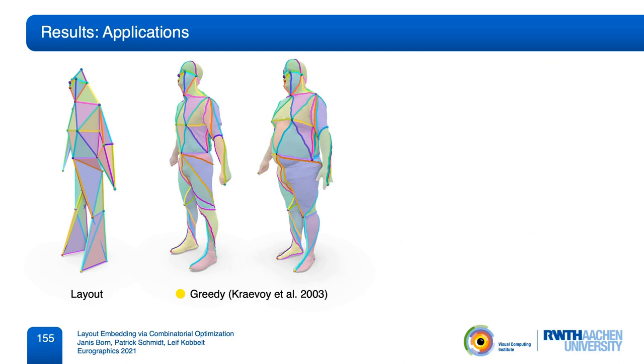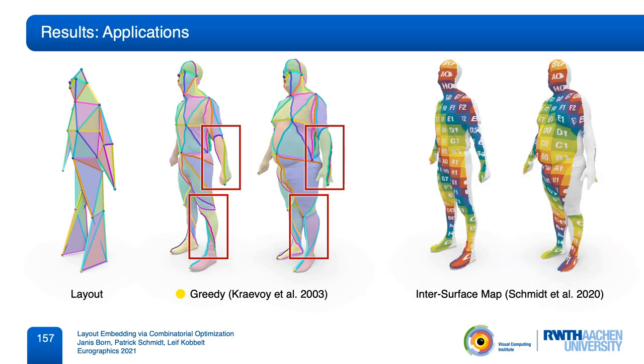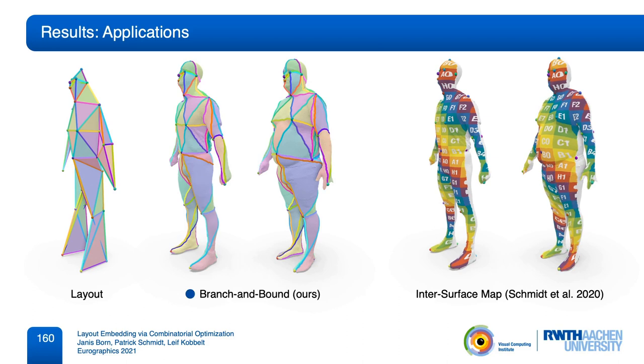If we instead use one of the greedy embeddings, you can see that the embedded paths have been twisted in different ways around the arms and legs of the two models. An inter-surface map initialized from this input will therefore have the same artifacts. The resulting map twists around the arm and the leg. And if we keep the landmark locations fixed, then no continuous map optimization will be able to recover from this wrong input. It is therefore important to have a reliable embedding method that can be used in automatic processing pipelines.